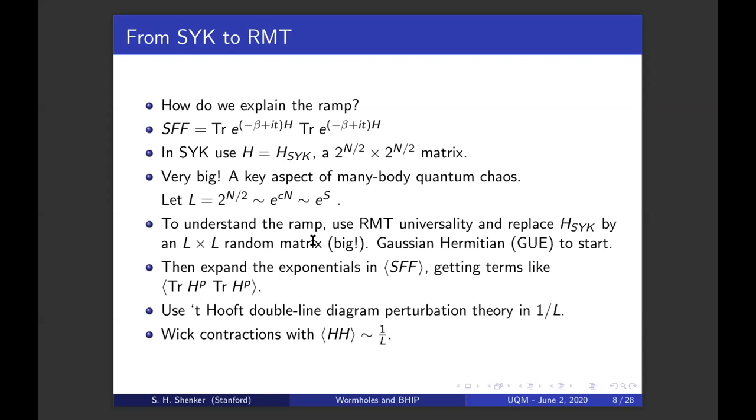By random matrix universality, we can understand the ramp by replacing HSYK by an L by L random matrix. Now in most applications of random matrices, at least in high energy physics, this is big. We're used to thinking of n by n matrix in Yang-Mills theory or something. This is a two to the n by two to the n matrix. And to get started by random matrix universality, we can assume the Gaussian make the matrix is just Gaussian, a part of the GUE ensemble to start.